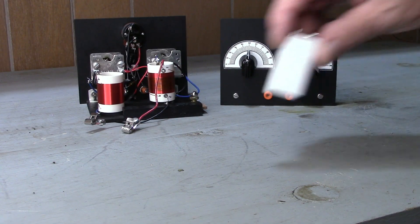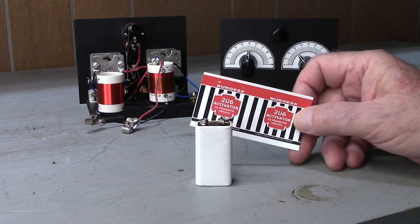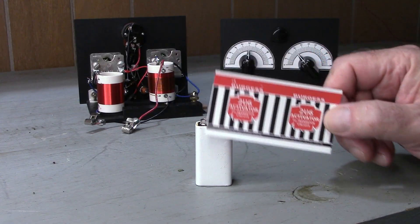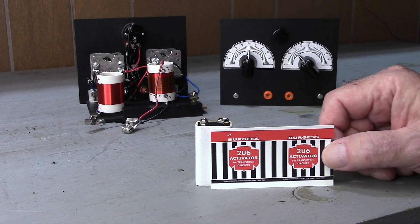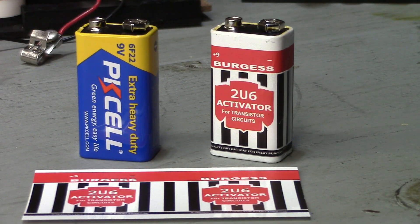So we're going to take this modern battery and we're going to paint it. And then after we paint it, we'll make some water slide decals and we'll put some water slide decals on the painted battery. And here's the result. Darn if that doesn't look like an actual Burgess battery.